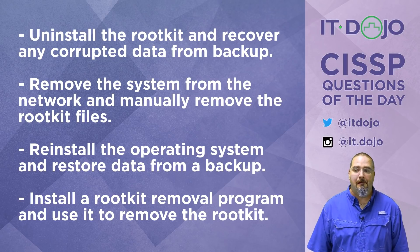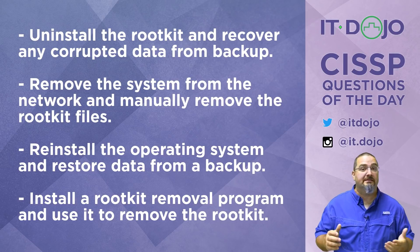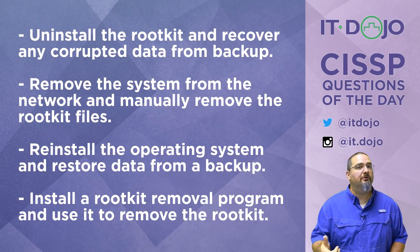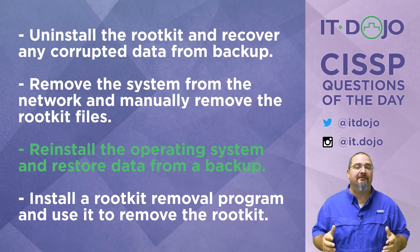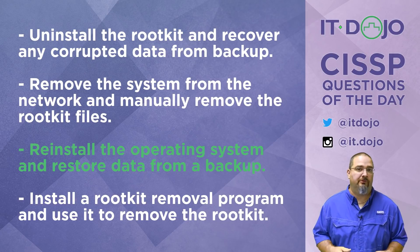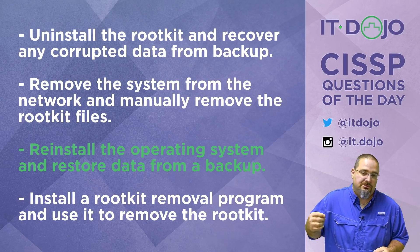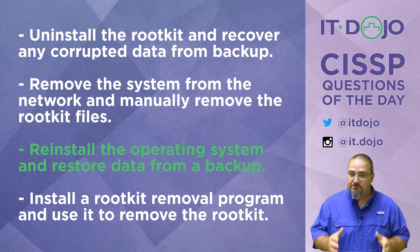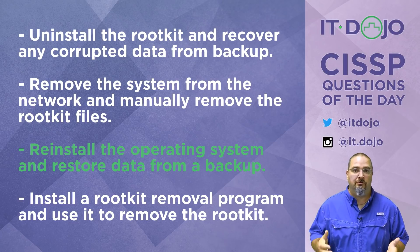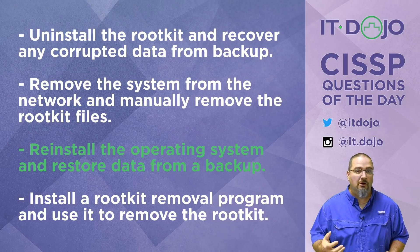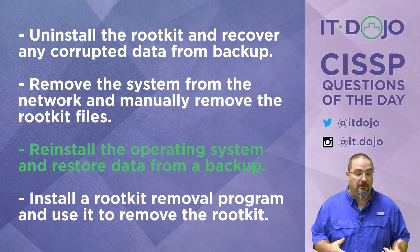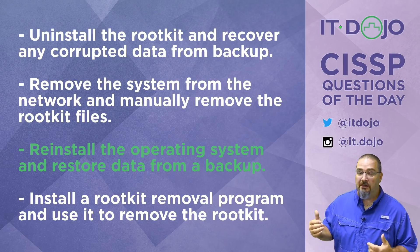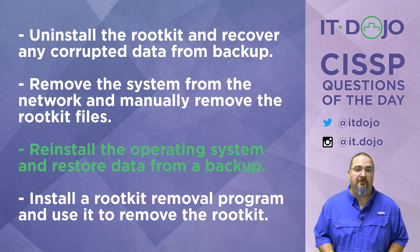Choice number three: reinstall the operating system from a trusted source and then recover your data from backup. Yes — that is widely regarded as the most appropriate course of action. There will always be exceptions and every situation can be a case-by-case decision, but generally speaking, if your system has been infected with a kernel-level rootkit, your confidence in that system is gone. You want to reinstall from a trusted source, recover data from a trusted backup, and take steps to make sure you don't recover yourself right back into being rootkitted. Wiping and starting over — 'slicking the rig' — is the angle you'll most commonly take.